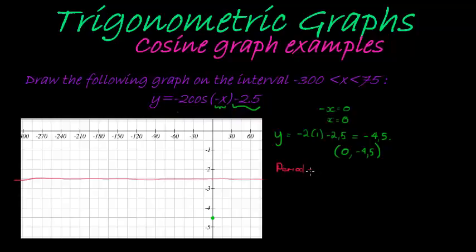Now on my center line, I must mark off my period. The period is 360 divided by the positive part of the coefficient of x. In this case, it's -1.